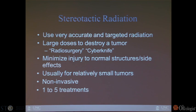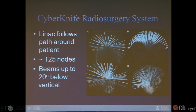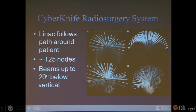The CyberKnife radiosurgery system at UNC is a linear accelerator mounted on a robotic head that can follow multiple paths. Each beam comes in focused on an area — such as in the brain — such that any entrance area gets very low dose, but everything converges right on the tumor to deliver a very high dose to this localized tumor mass.